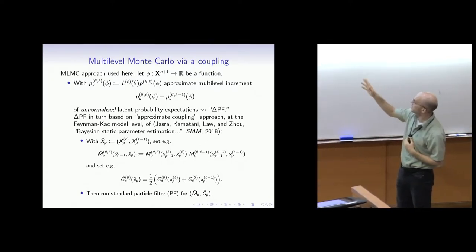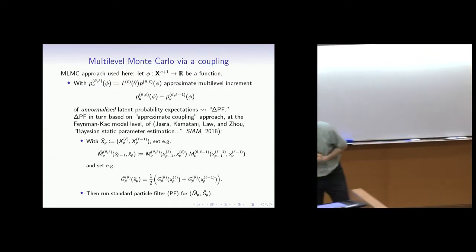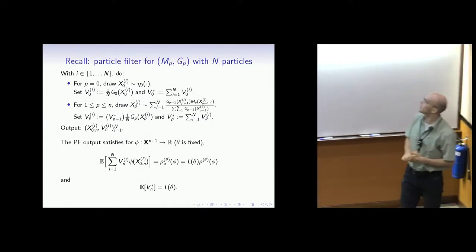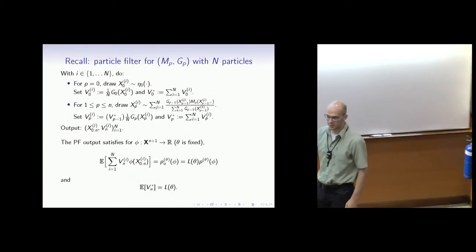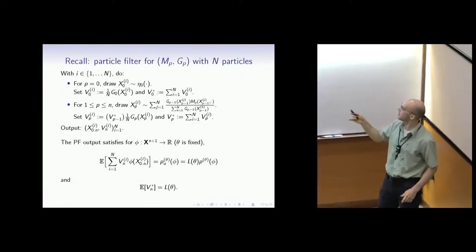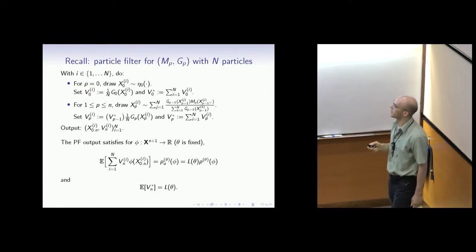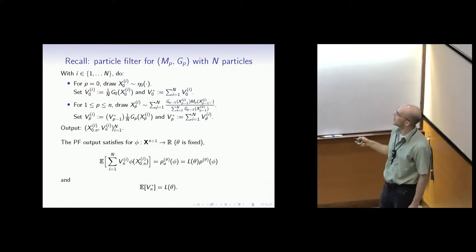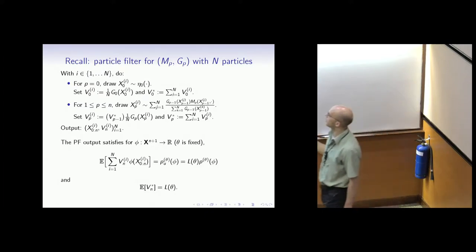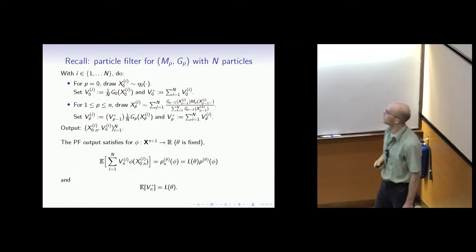We define this new model in terms of transition and potential, then feed it into the standard particle filter algorithm. If you've never implemented this algorithm, it won't make much sense, but once you've implemented it, it becomes much clearer. The important part is the output - it outputs a set of trajectories which can be retraced from these finite transitions, and a set of weights. It provides an unbiased estimate for the likelihood and for this expectation over the unnormalized latent probability.